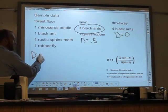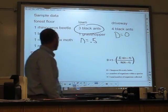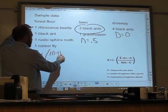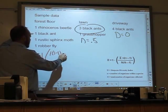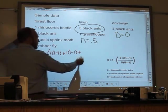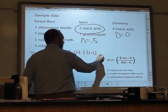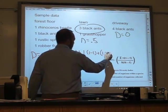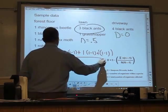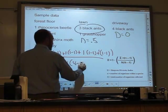starting with one. And I'm going to do a sum of n minus n minus one for each organism. So here I have one times one minus one. And then for the black ant, I have one times one minus one. And for the sphinx moth, I have one times one minus one. And for the robber fly, I have one times one minus one. All over the total number of insects caught, four times four minus one.